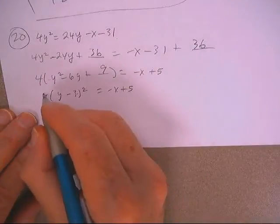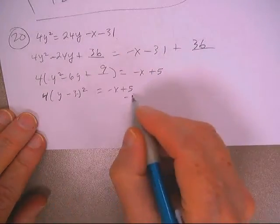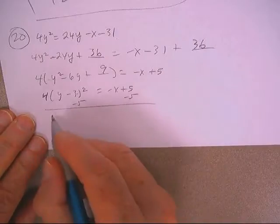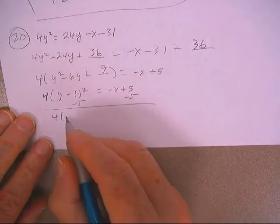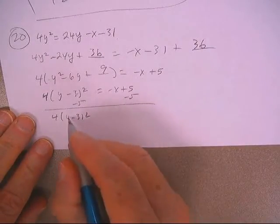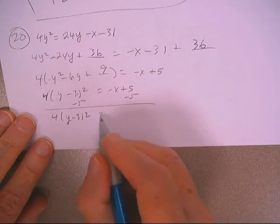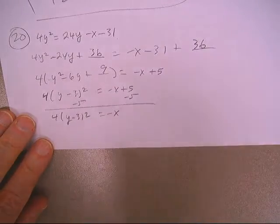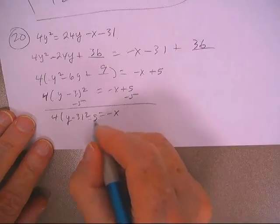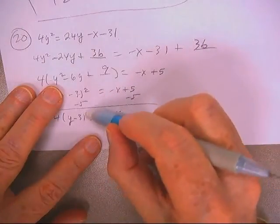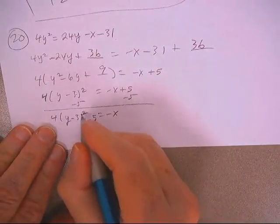Okay, so I need to subtract 5 from both sides, and that gives me this. Oops, I didn't write the negative 5 on there, and that 2 didn't quite look like a power did it. That's better.